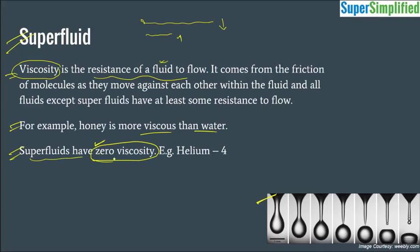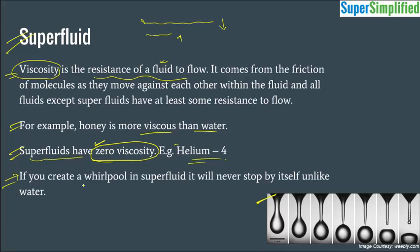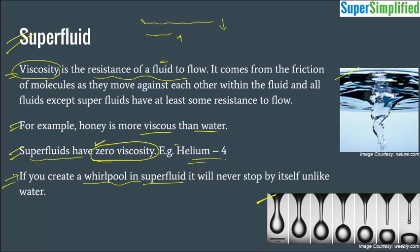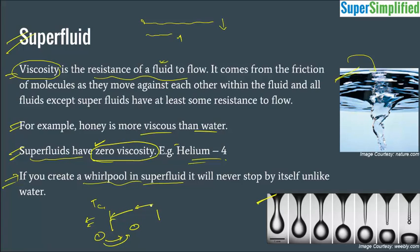They have zero viscosity. Theoretically, it is also said that if you create a whirlpool in a superfluid, it will never stop by itself. You have to apply an external force to stop that whirlpool. Now, you have seen superconductors and superfluids with very fantastic properties. But those properties are only visible below a certain critical temperature. So why is that phase transition happening? What is changing inside? That is the question which these scientists have answered with the help of topology.